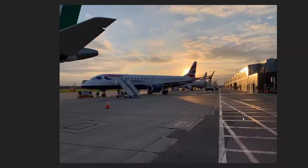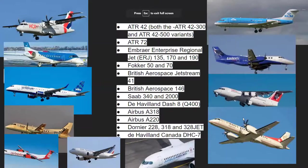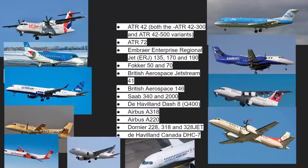So we were just looking at British Airways and this is British Airways' Embraer aircraft at London City Airport. The aircraft allowed at London City Airport include: the ATR-42 and ATR-72, the Embraer 135, 170, and 190, the Fokker 50 and Fokker 70, the British Aerospace Jetstream 41, the BAE 146, the Saab 340 and Saab 2000, the De Havilland Dash 8, the Airbus A318 and A220, the Dornier 228, the M328 Jet, and the De Havilland Canada DHC-7.